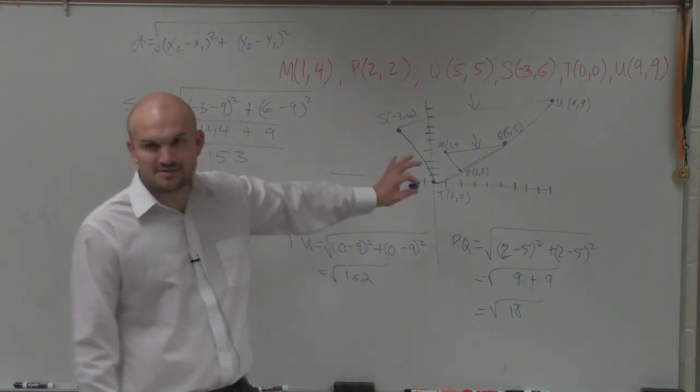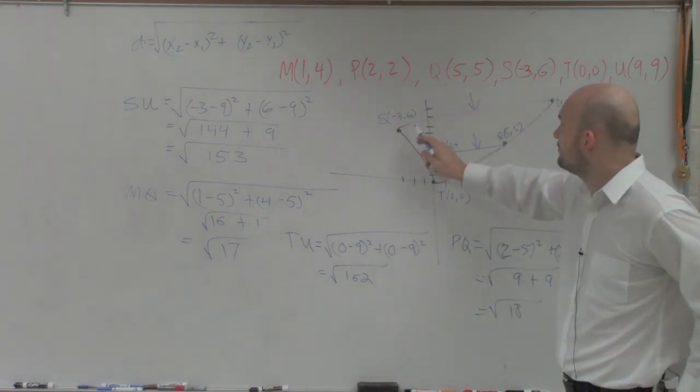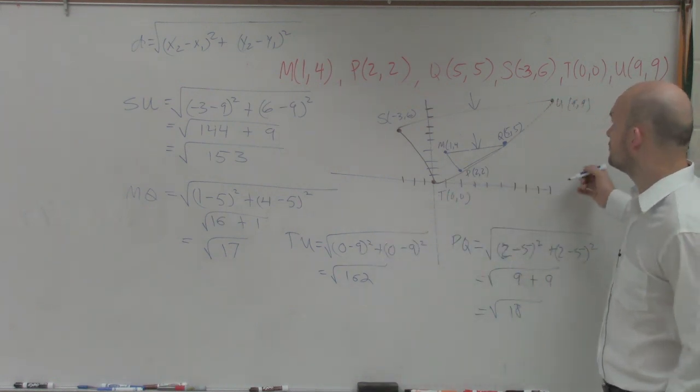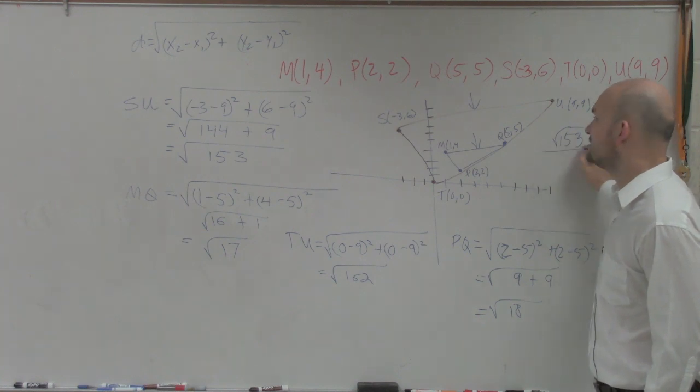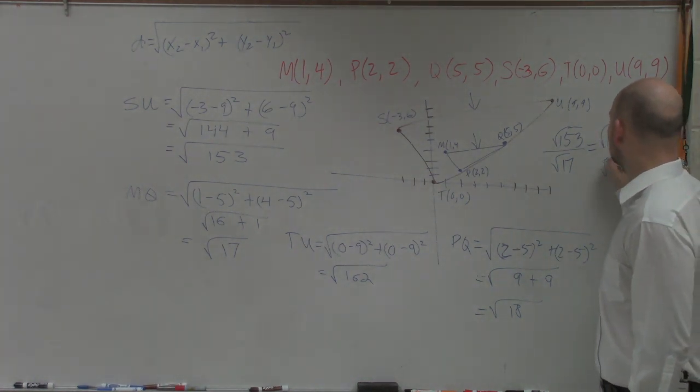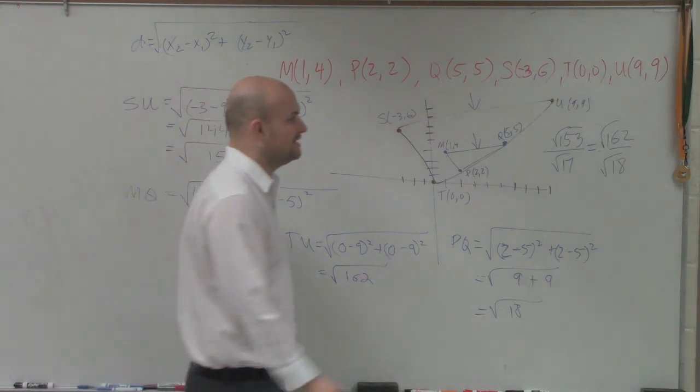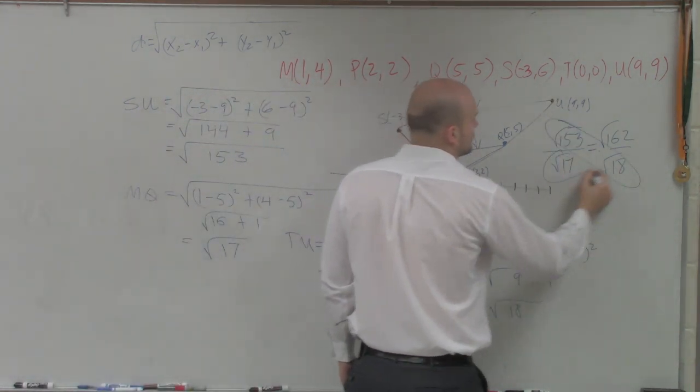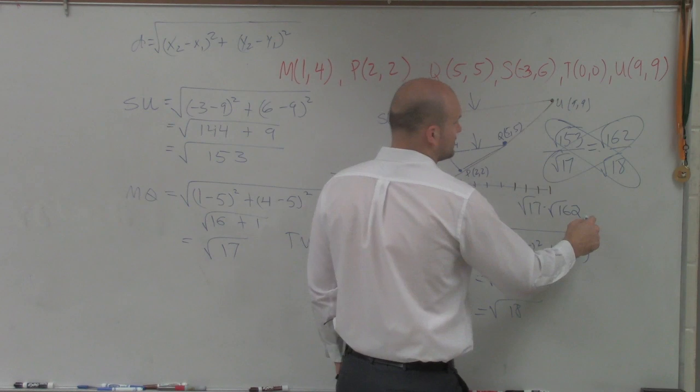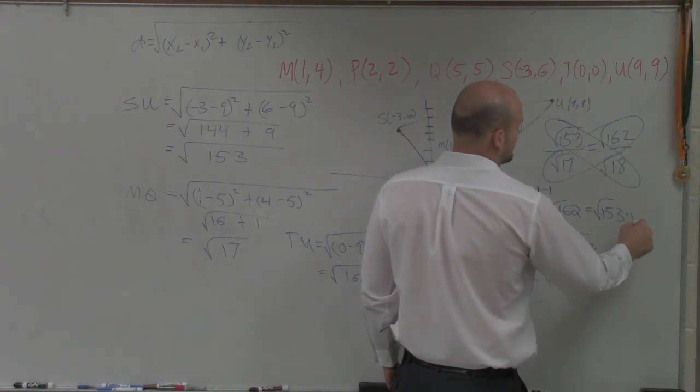So now, what I want to do is we need to be able to determine, is from SU to MQ equal to TU to PQ. So I'll say that again. Is the square root of 153 divided by the square root of 17 equal to the square root of 162 over the square root of 18? So now, what we're going to do is we need to cross-multiply. So you have the square root of 17 times the square root of 162, equal to the square root of 153 times the square root of 18.